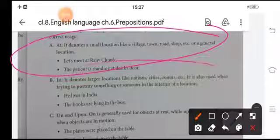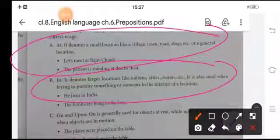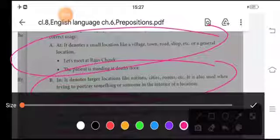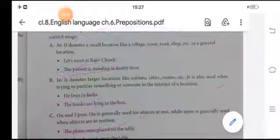In is denoted in a location like nation, country, rooms, etc. On and upon is generally used to the object at rest, while upon is generally used when object is in motion. On, when the object is dead, like the plates were placed on the table, and the frog hopped upon the table. In the second point, it's an action done by the frog.